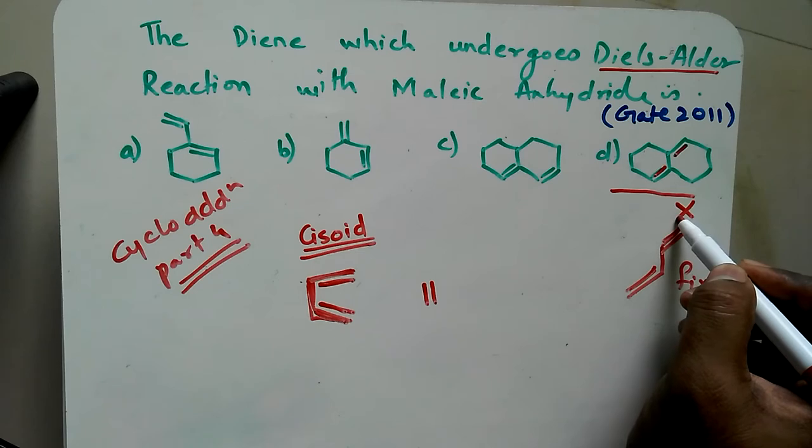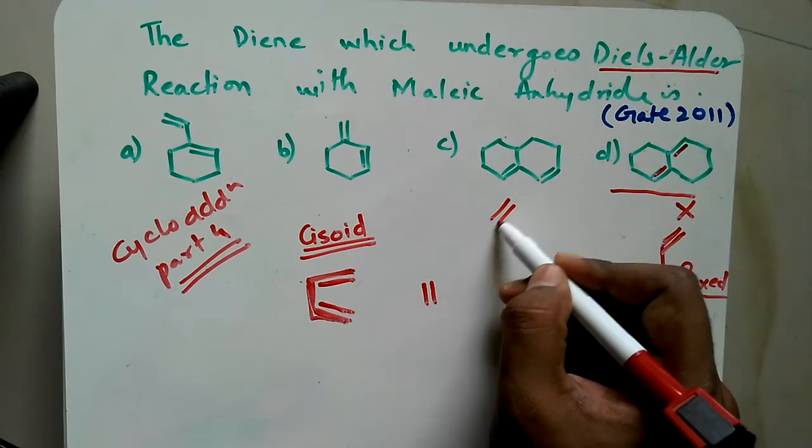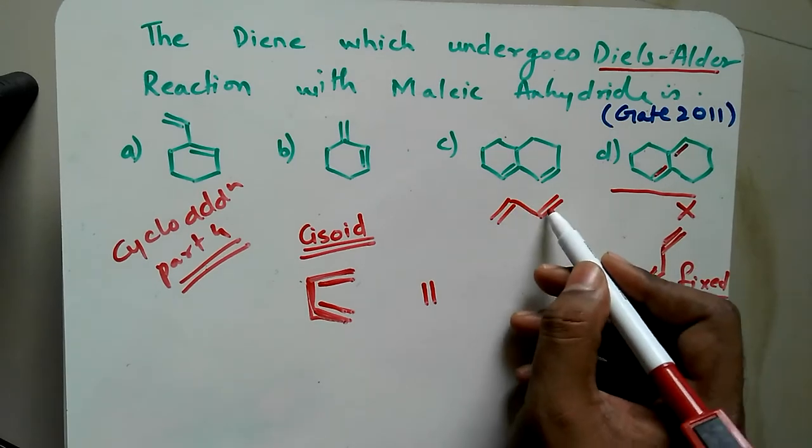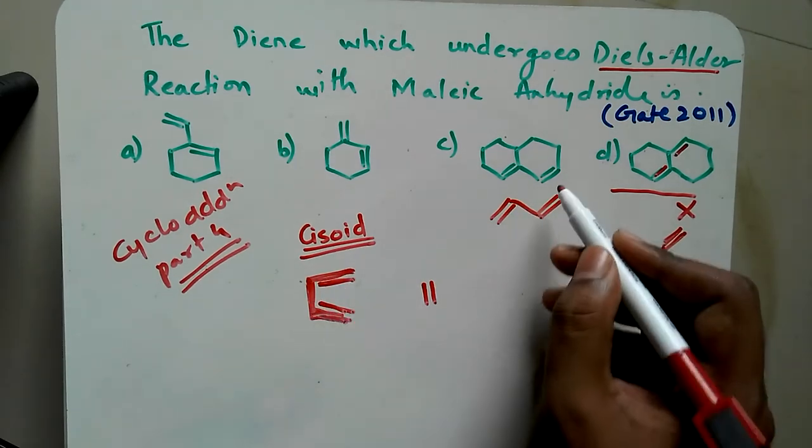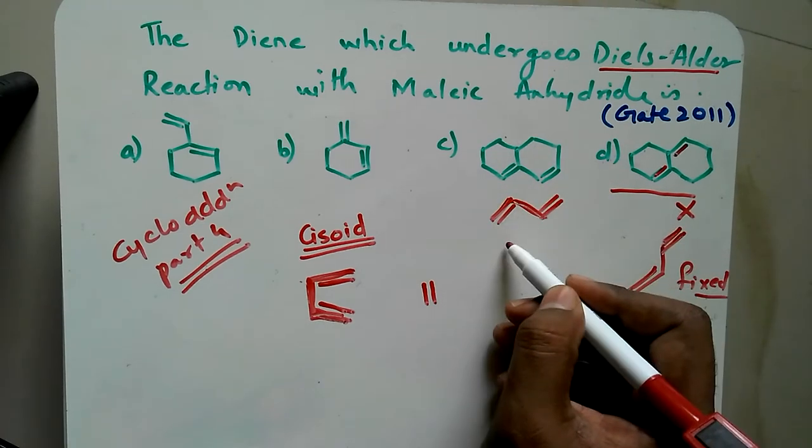Regarding this part, again since the double bonds are in this way, they are not on the same side and this will forever remain in this way. It will never come in the cisoid condition. Again, this will not give you the Diels-Alder reaction.